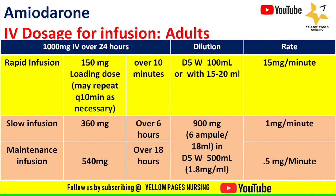The infusion is usually diluted in dextrose 5% water or normal saline and is given in two forms: either rapid infusion or slow and maintenance infusion. In case of rapid infusion, amiodarone is diluted either in 100 ml or 15 to 20 ml of D5W and given as a 150 mg loading dose over 10 minutes at the rate of 15 mg per minute.